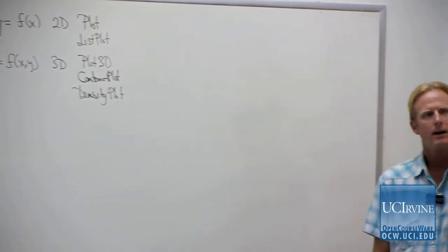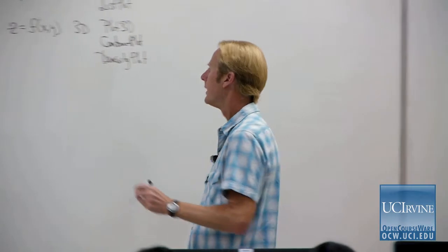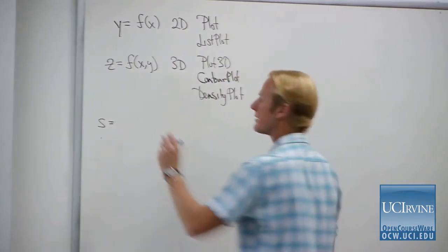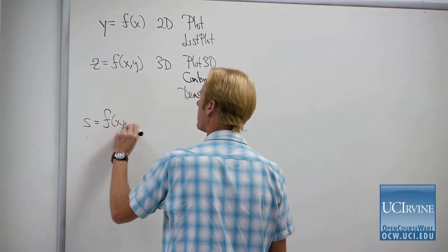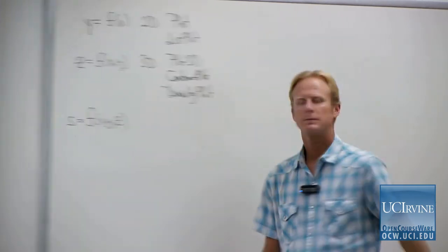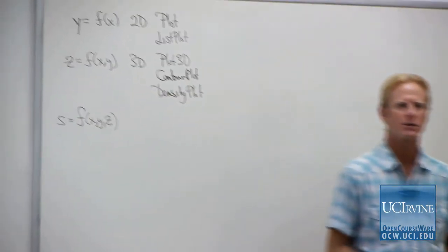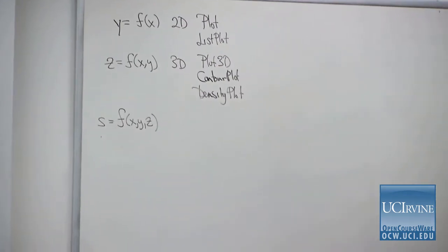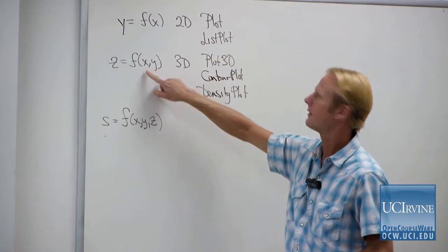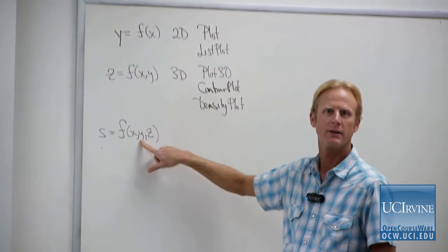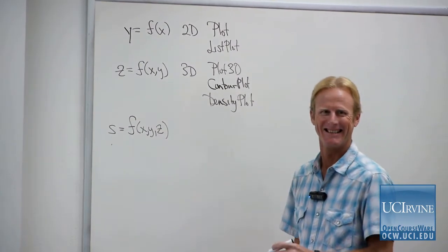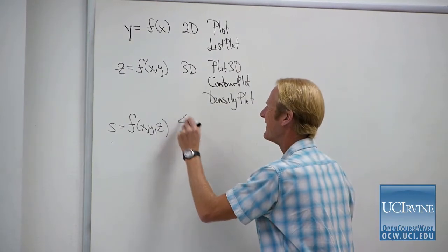Today, to finish up plotting, we'll learn how to represent functions of the form S = S(x, y, z). How many dimensions does that surface have? One variable — two dimensions; two variables — three dimensions; three variables — four dimensions. It's not a trick question.